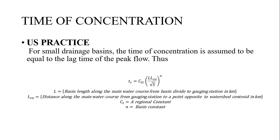In the US practice formula, CTL is a constant — these are basin and region constants. S is the slope and L is the length of the channel, i.e., the basin length along the main water course from the basin divide to the gauging station. LC is the distance along the main water course from the gauging station to a point opposite to the watershed centroid, in kilometers.